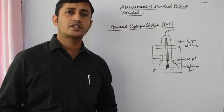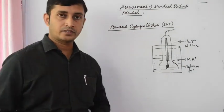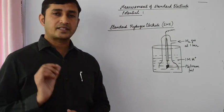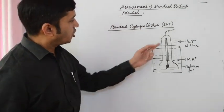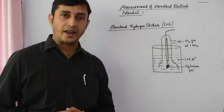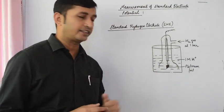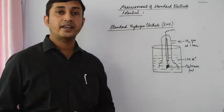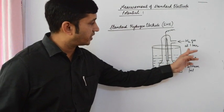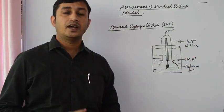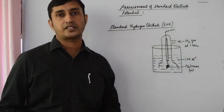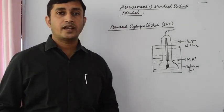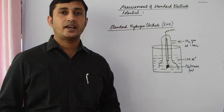The most commonly used reference electrode is the standard hydrogen electrode, whose standard electrode potential is taken as zero. A standard hydrogen electrode consists of a platinum wire coated with platinum black, with a platinum foil at its end. It is dipped in a solution containing one molar of hydrogen ions, and hydrogen gas bubbles through the solution at one bar pressure. The temperature of the cell is maintained at 298 Kelvin. This electrode is also known as a reversible electrode, as it can act both as cathode and anode.